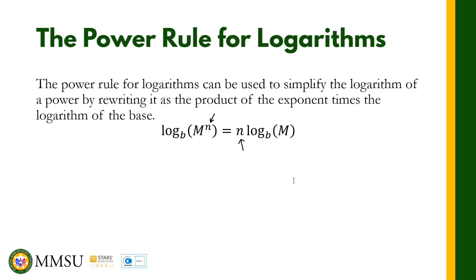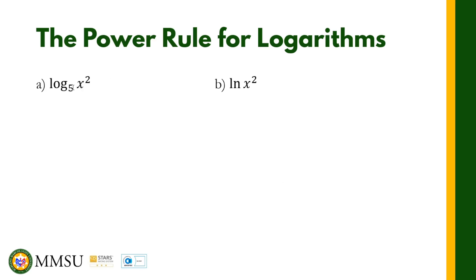Let us try to apply this rule in the following example. We have logarithm of x squared in base 5. As you can see, the exponent here is 2 — this 2 right here now becomes a coefficient. So this now becomes 2 times the logarithm of x in base 5. That's how we rewrite that one using the power rule.